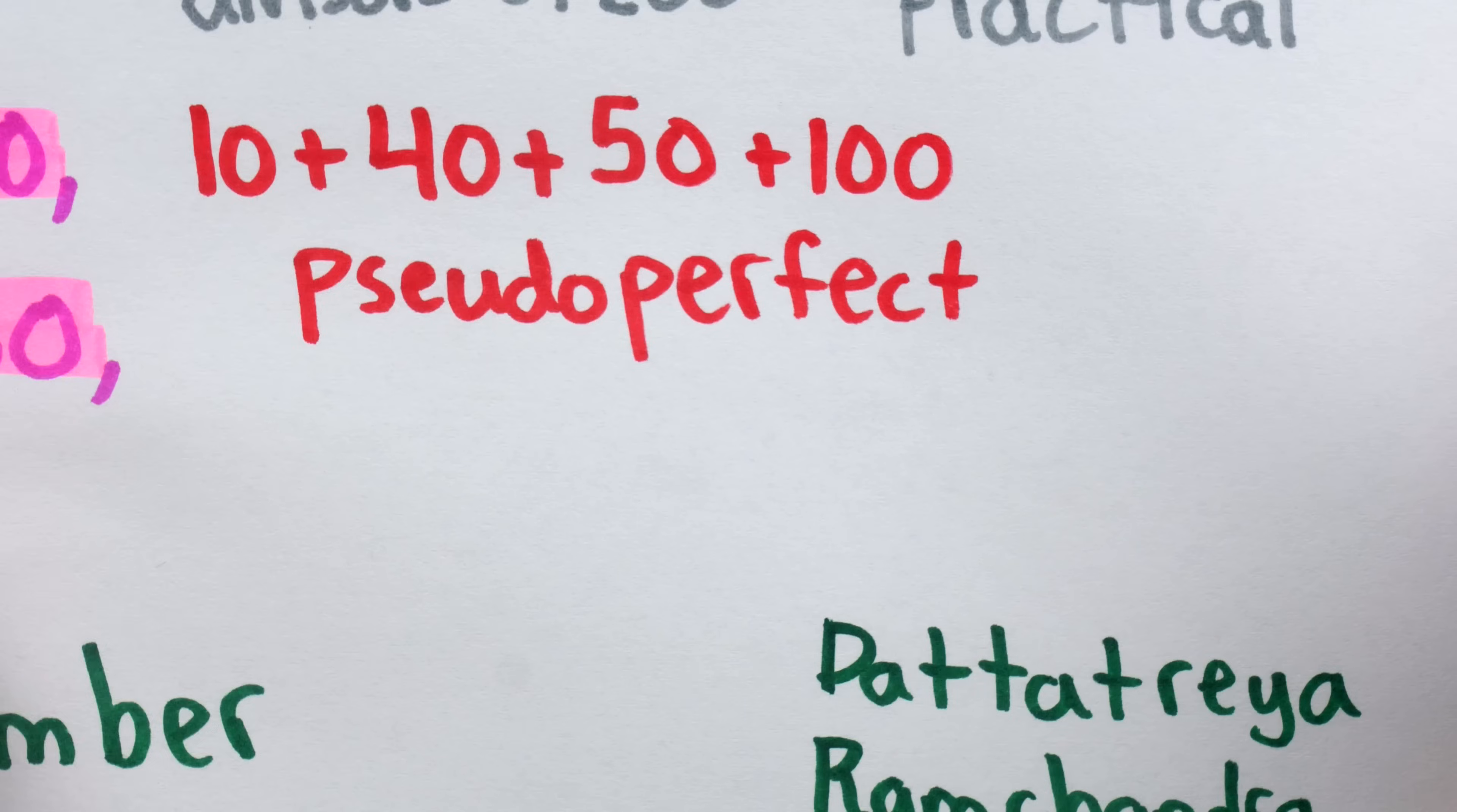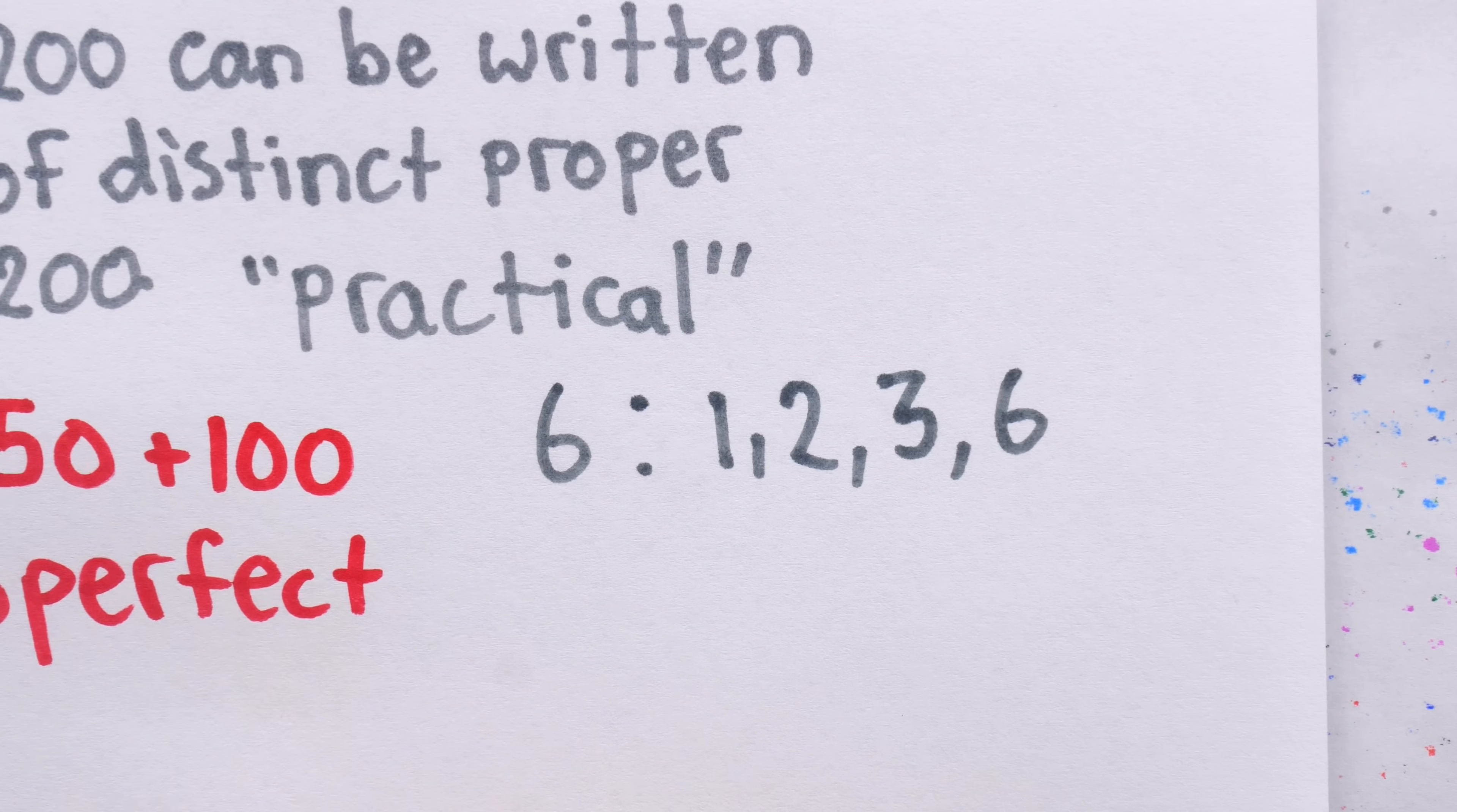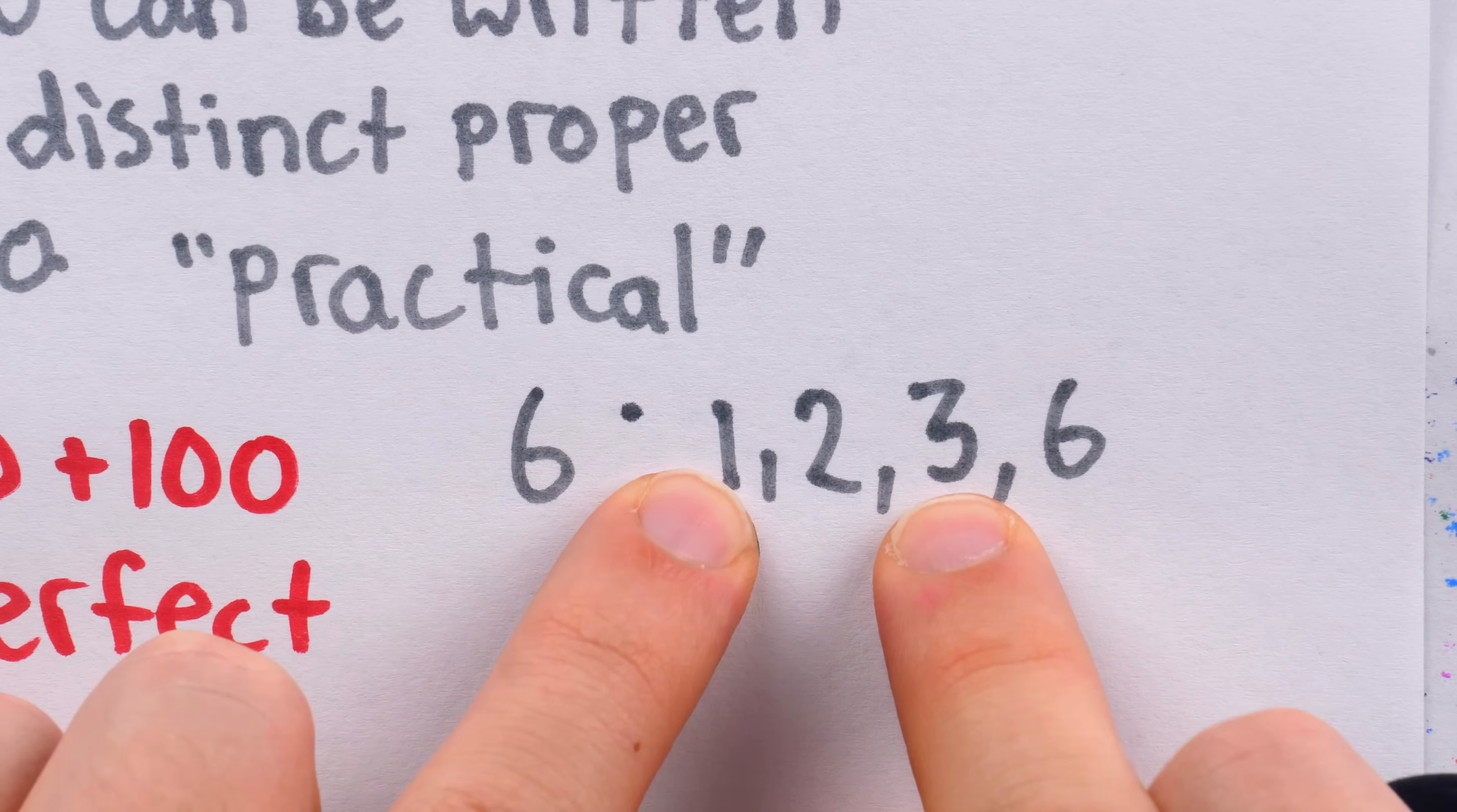For another example of a practical number that's quickly verifiable, consider the number 6. It has, as its divisors, 1, 2, 3, and 6. And indeed, we can create every positive integer less than 6 by summing proper divisors: 1, 2, 3, 4, 5.